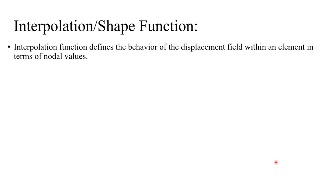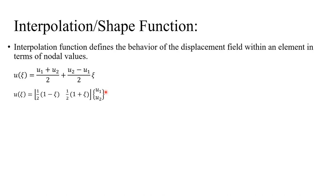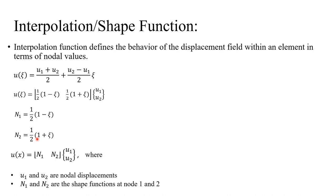The interpolation function is defined as the behavior of the displacement field within an element in terms of the nodal values. It doesn't have to be displacement — the nodal values could be temperature, heat flux, or displacement. Writing the equation again, we can represent it in matrix form: a row matrix of shape functions and a column matrix of nodal displacements. The first component N1 is the shape function of node 1, and N2 is the shape function of node 2, so displacement u = [N1  N2]{u1, u2}.